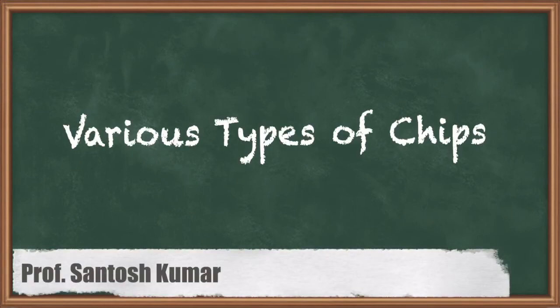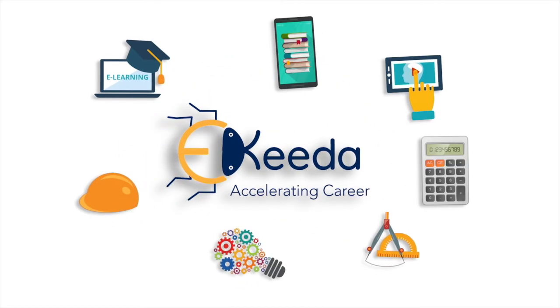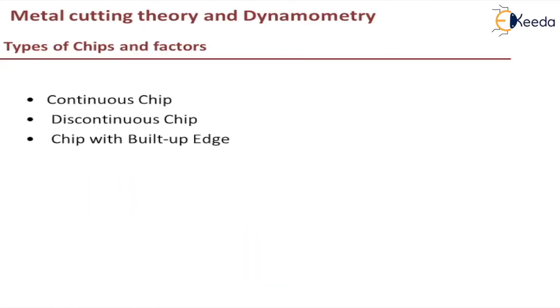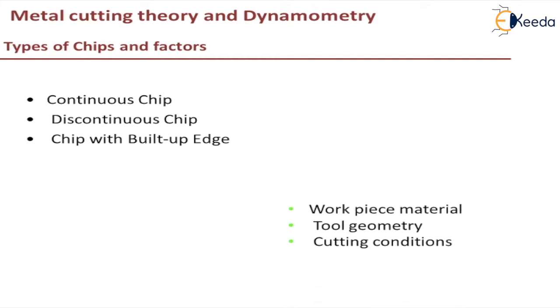Hello students, this is Santosh Kumar HV, your course instructor for Machining Sciences and Tool Design. We were discussing Module 1, that is Metal Cutting Theory and Dynamometry, and today we'll discuss the topic: types of metal chips. Three types of chip formation will happen — continuous chip, discontinuous chip, and chip with built-up edge. These types of chips get influenced by parameters such as workpiece material, tool geometry, and cutting conditions. By changing these parameters you can change the type of chip formation.